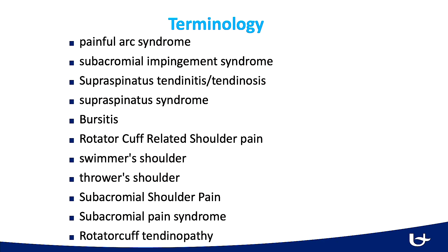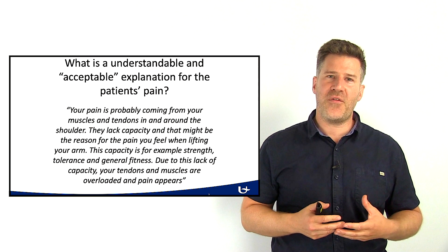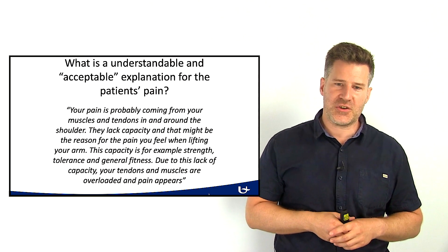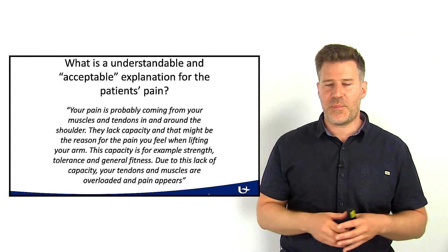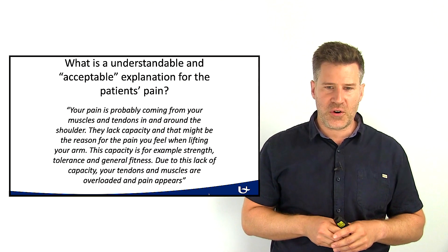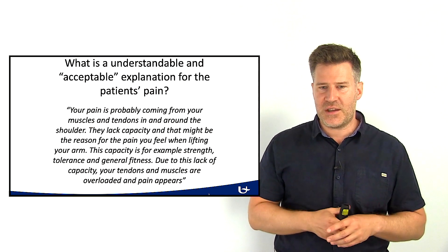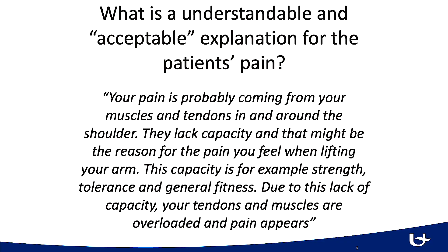Consensus is rising to use the term rotator cuff-related shoulder pain. If you need a good, acceptable, and above all more correct explanation for the patient's shoulder pain, this is what you can use: your pain is probably coming from your muscles and tendons in and around the shoulder. They lack capacity — for example, strength, tolerance, and general fitness — and that might be the reason for the pain you feel when lifting your arm. This is a great explanation to give your patient in replacement of the shoulder impingement syndrome terminology.